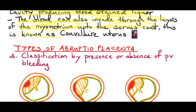The blood can also invade through the layers of the myometrium up to the serous coat. This is known as a Couvelaire uterus. If you look at a Couvelaire uterus, it has diffuse or patchy discolorations of a purplish color, also known as a port wine color.